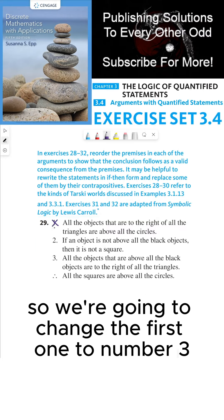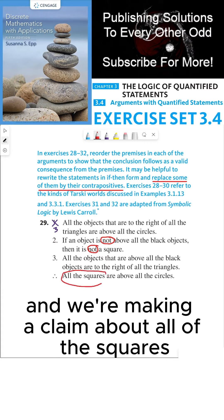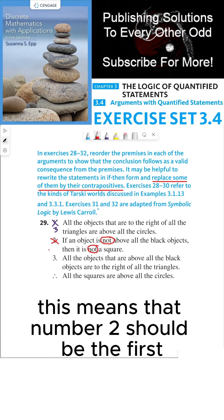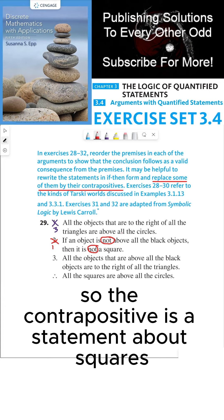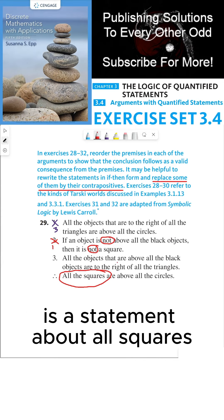Statement two says if an object is not above all the black objects, then it is not a square. Since we have two negations, we can replace this with its contrapositive: if an object is a square, then it is above all the black objects. This contrapositive is a universally quantified statement about all squares, which is what we're making a claim about, so this should be the first statement in our reordered argument.